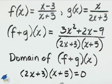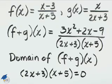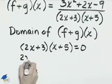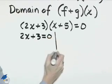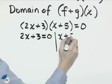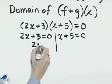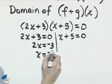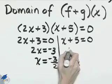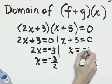2x plus 3, that quantity times the quantity x plus 5 equals 0. We'll set up the two equations. 2x plus 3 equals 0. And x plus 5 equals 0. We'll have 2x equals negative 3. x is negative 3 halves. And here x is equal to negative 5.